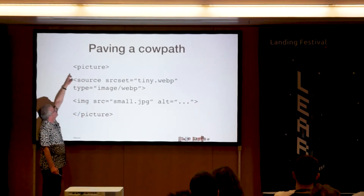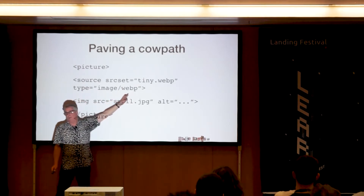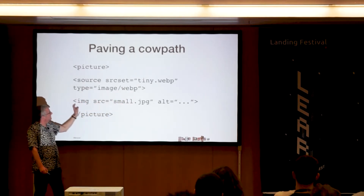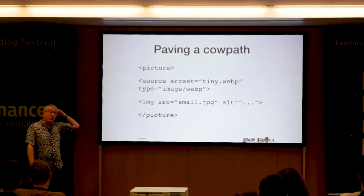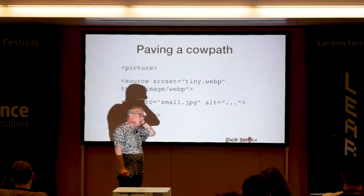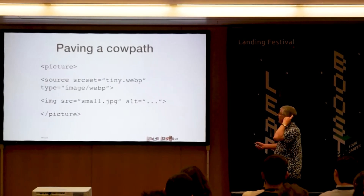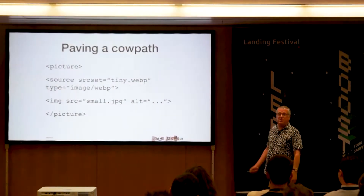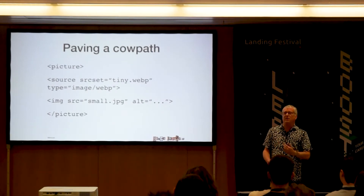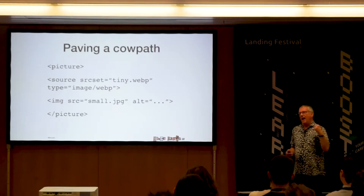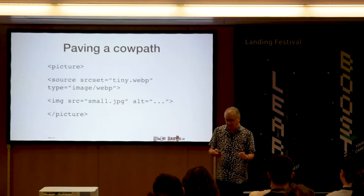If you do understand the picture element, but do not understand the WebP format, then you show the fallback content. Nobody gets a worse time. And if you are Chrome, Firefox, or Opera and you do understand WebP, you will show the WebP, which is about 30% smaller than JPEG for the same picture quality. Nobody gets a worse time with HTML, and if you have a modern browser, you get a better time. Backwards compatible by default.